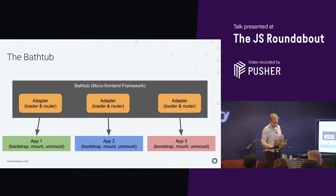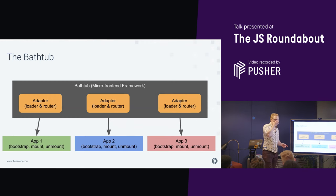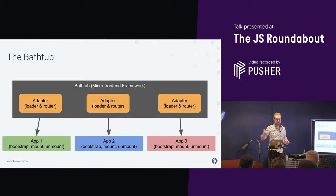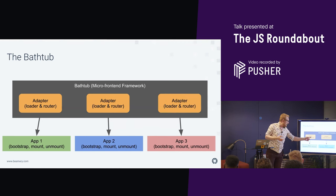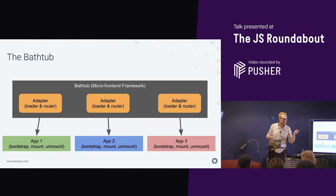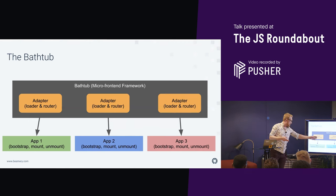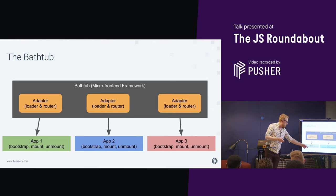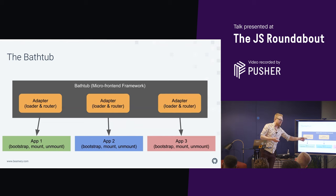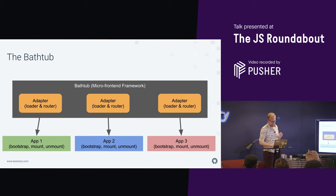For each application, the bathtub has a tiny adapter with two functions: a loader and a router. The loader knows how to fetch the code from the network. The router is just a function that returns true or false. If it returns true, the bathtub checks if the app is loaded — if not, it loads it via promises, bootstraps it, and mounts it in the DOM. If the router returns false, it does the opposite and unmounts the app. Then you can just mount and unmount as you navigate around the application.